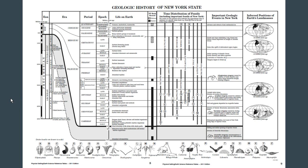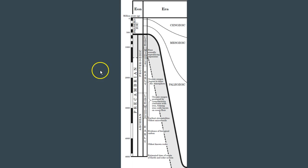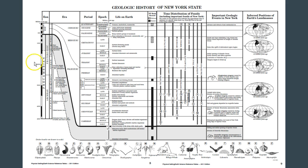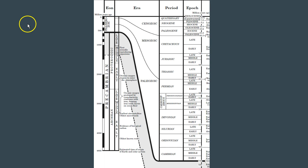Next we're going to break down the Phanerozoic eon, which is broken down into eras. The Phanerozoic is broken down into the Cenozoic era, the Mesozoic era, and the Paleozoic era. Now we're back at the reference table. We broke down eons to eras. Now we're going to break down our era into periods and epochs, or some might say epochs, which sounds like a weird animal.